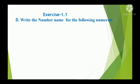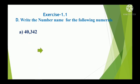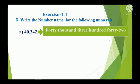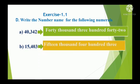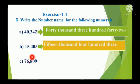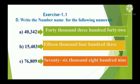Exercise 1.1d: Write the number name for the following numerals. Here, numerals are given and we have to write the number name. 40,342 — forty thousand three hundred and forty-two. 15,403 — fifteen thousand four hundred and three. 76,809 — seventy-six thousand eight hundred and nine.